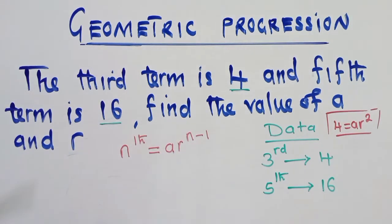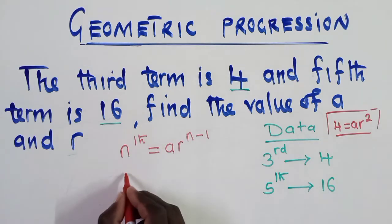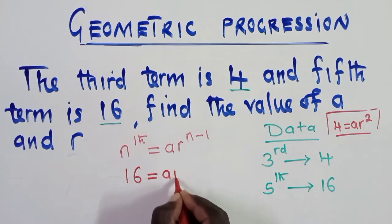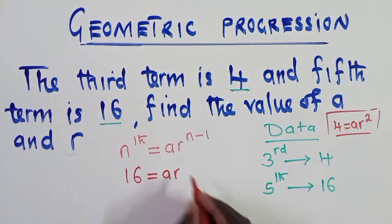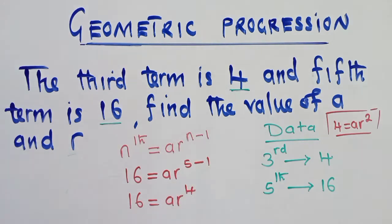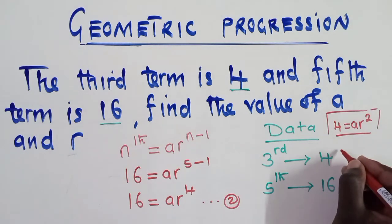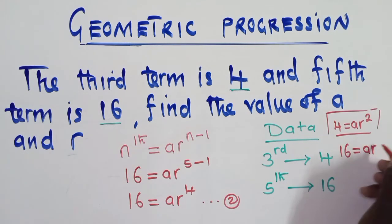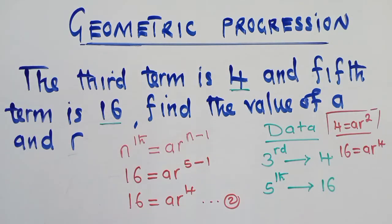Now we go to equation 2. For the fifth term, n = 5, so we write: 16 = a · r^(5−1), which simplifies to 16 = a · r⁴. This is equation 2.